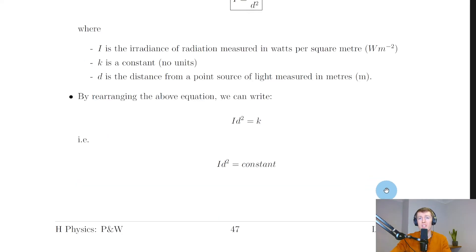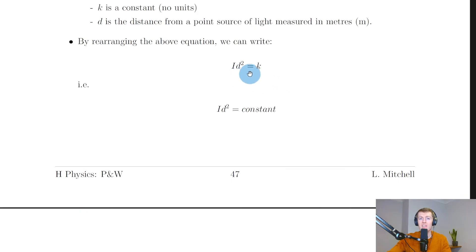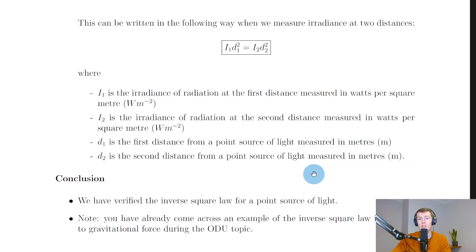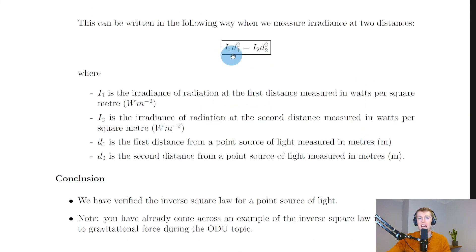By rearranging I = k/d², we get I·d² = k, a constant. This lets us form a second equation — the same trick used in National 5 for Boyle's law and Charles's law — giving I₁d₁² = I₂d₂², where subscript 1 refers to the first distance and irradiance and subscript 2 refers to the second. This equation could extend to any number of subscripts, but in practice you'll never need more than two.